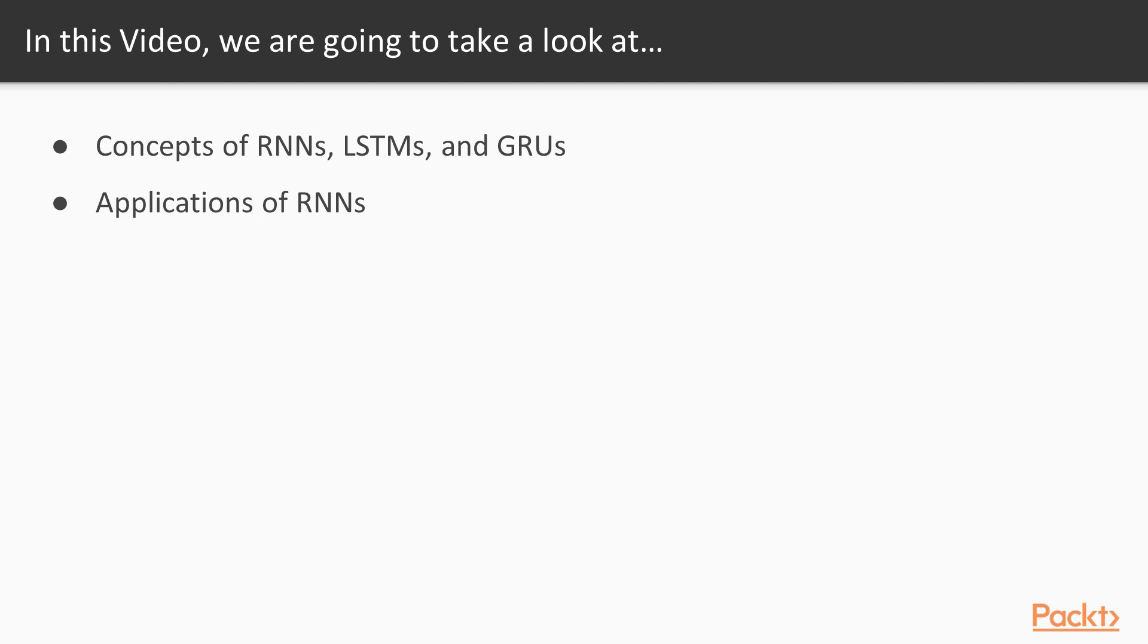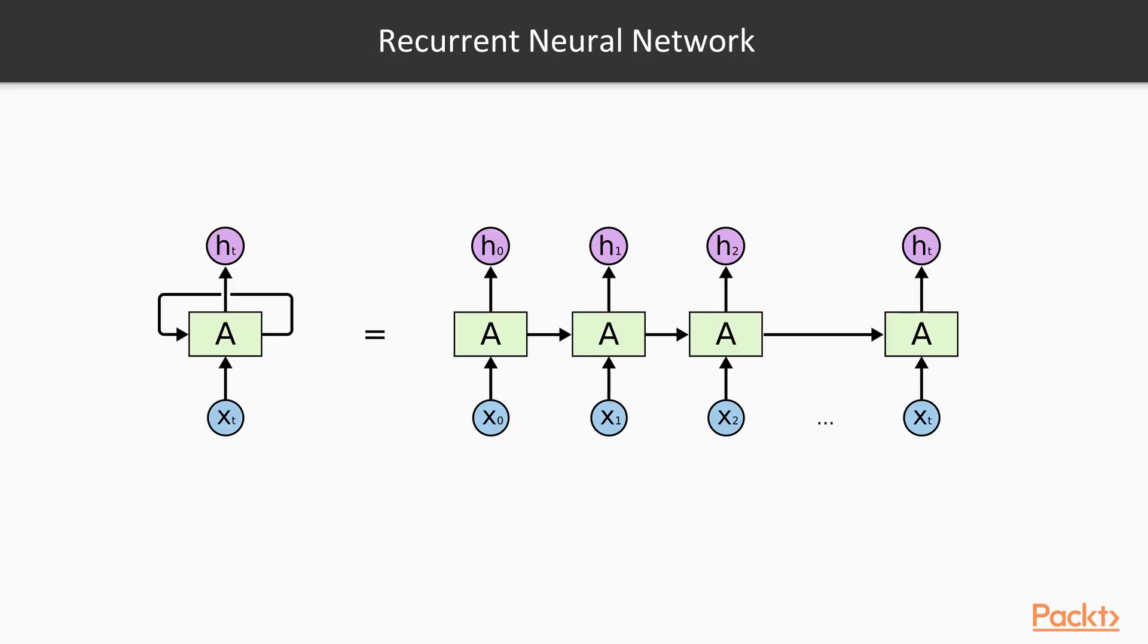We are also going to look at some of the common applications of RNNs. Let's first look at how recurrent neural networks are different from normal neural networks. The most important difference is that normal artificial neural networks can't deal with sequential data and direct memory.